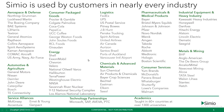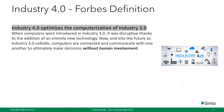The Forbes definition of Industry 4.0 says it optimizes the computerization of Industry 3.0. During the Industry 3.0 revolution, everybody was supposed to computerize all of their systems — but that didn't happen. Some factories have very old ERP systems, some have no manufacturing execution systems, no monitoring or track-and-trace systems, and some do their WIP collection by hand in an Excel sheet. A key point is that now and into the future, computers are connected and communicate with one another to ultimately make decisions without human involvement.